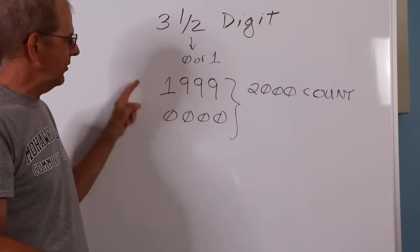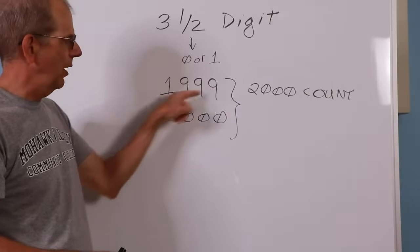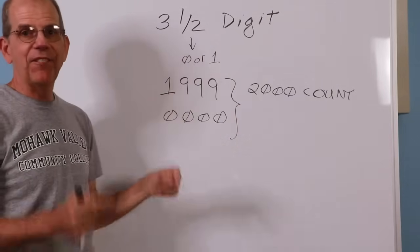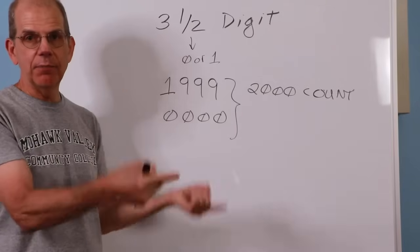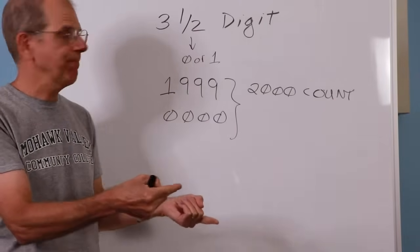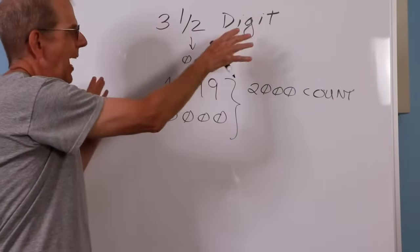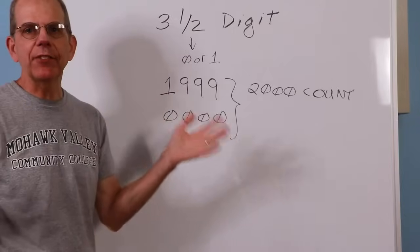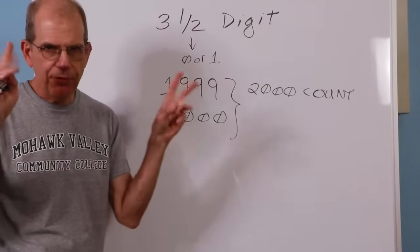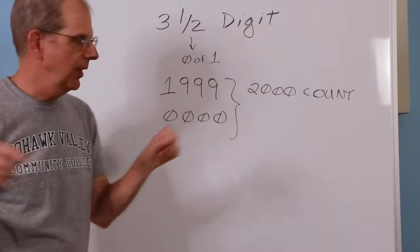So if it goes up to a 4, 0, 1, 2, 3, 4, then the biggest number you could have would be a 4 and then all 9s. So that would be a 5,000-count meter. So a 1/2-digit is more common, but you might see, you know, one of these 3/4-digit kinds of things.